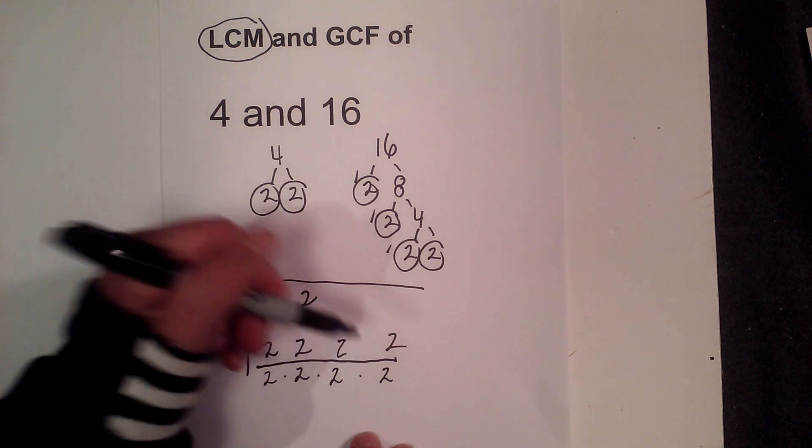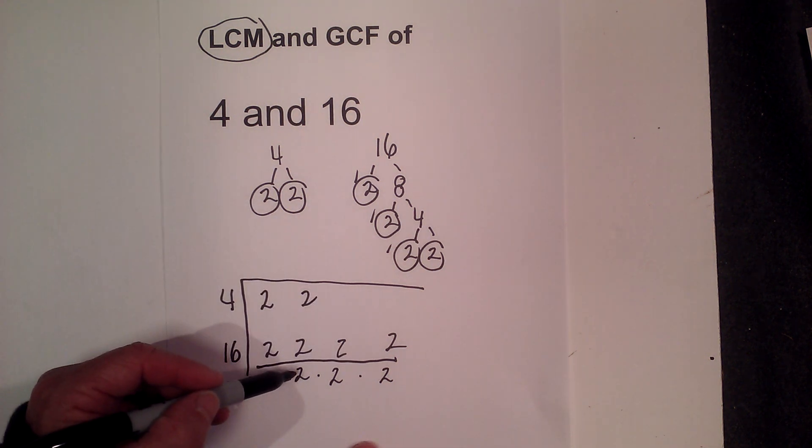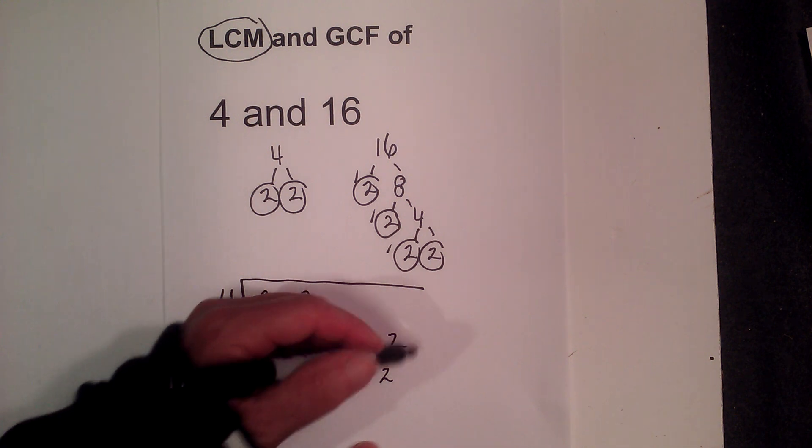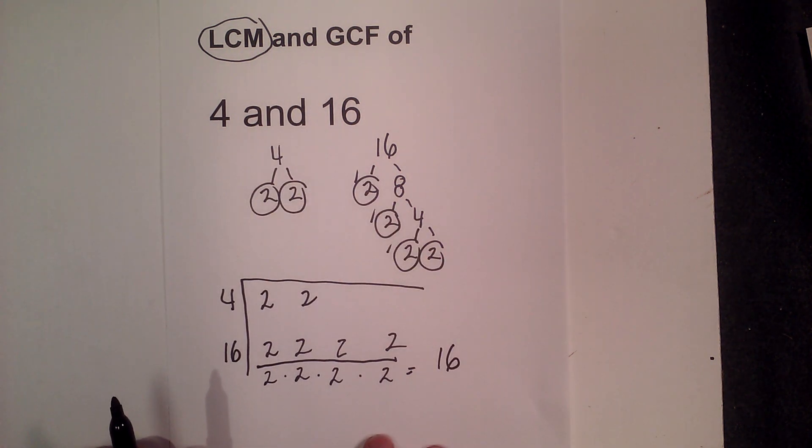Then all you do is multiply these together for the LCM. So you have 2 times 2 is 4, 4 times 2 is 8, 8 times 2 is 16. Now the LCM is 16.